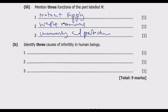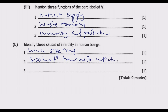Question 4: identify three causes of infertility in human beings. First, weak sperms — often referred to as low sperm count or poor sperm quality — can lead to infertility, because they may lack the necessary strength or quantity to reach and fertilize an ovum. Second, STIs such as chlamydia and gonorrhea can cause scarring and inflammation in the reproductive tract, leading to conditions like pelvic inflammatory disease, which can block the fallopian tubes and prevent fertilization.